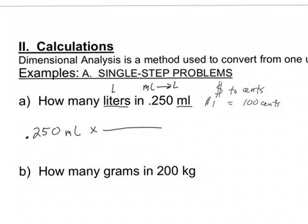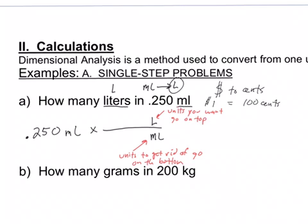I want to give you some tips and rules to follow. I want to get rid of the units milliliters - those go on the bottom. So units to get rid of go on the bottom. The units I want to get go on top. In this case, liters. Or we could see up here that was what I wanted. So units you want go on top, and this is going to be a little general rule for us.